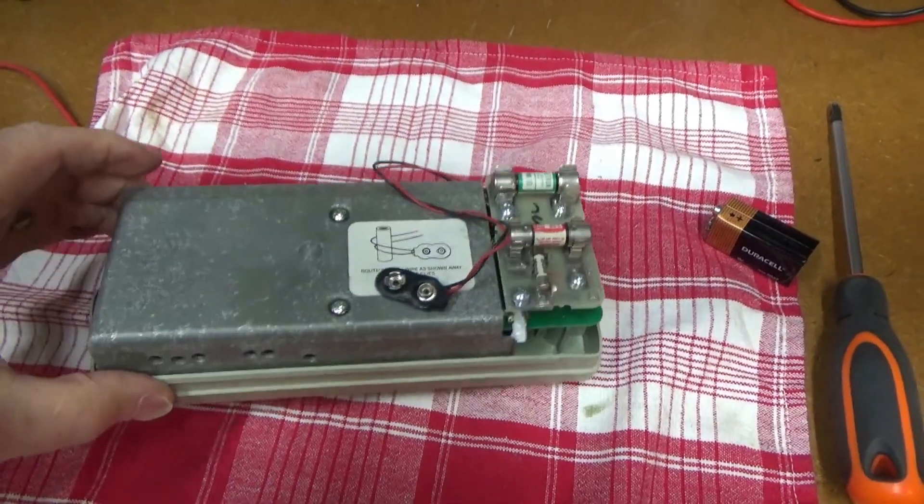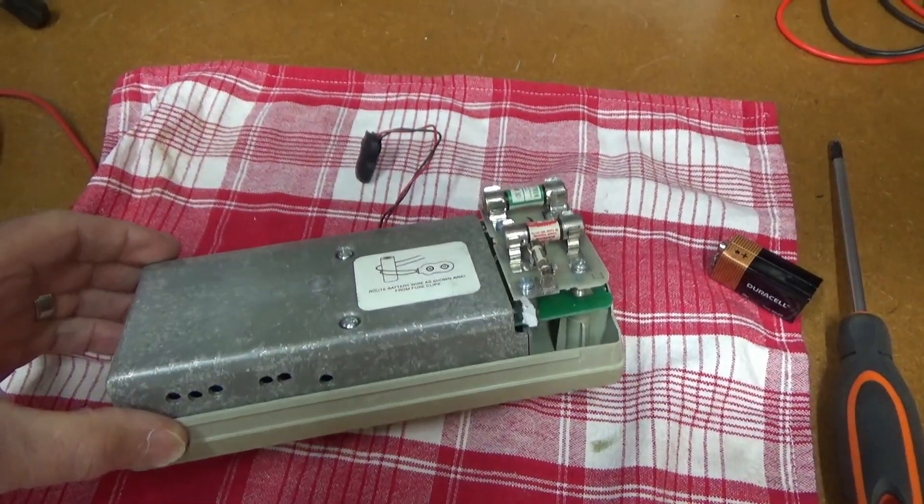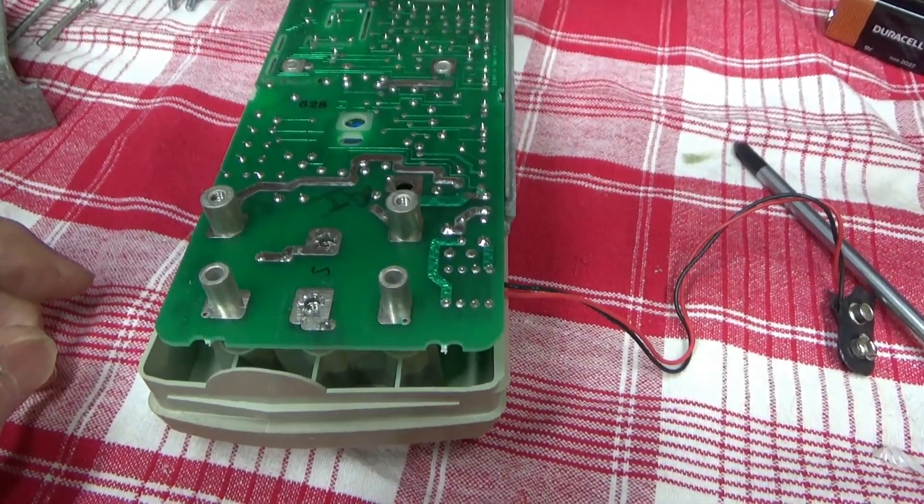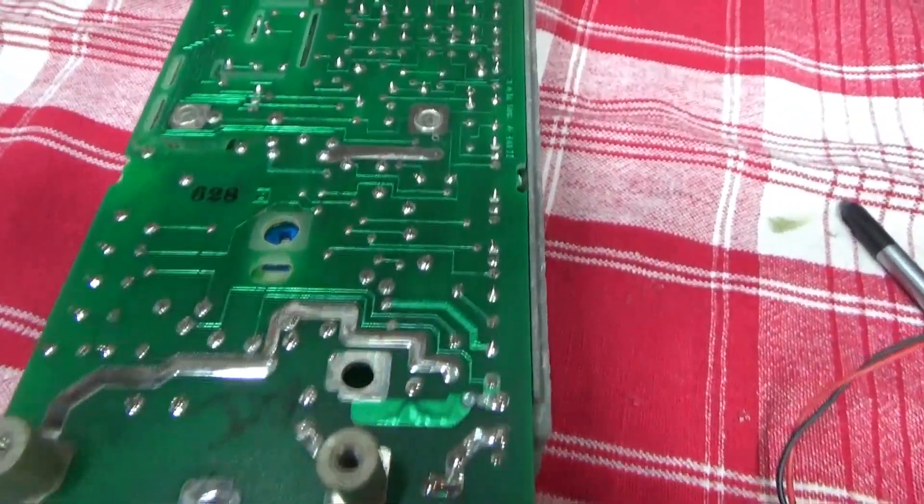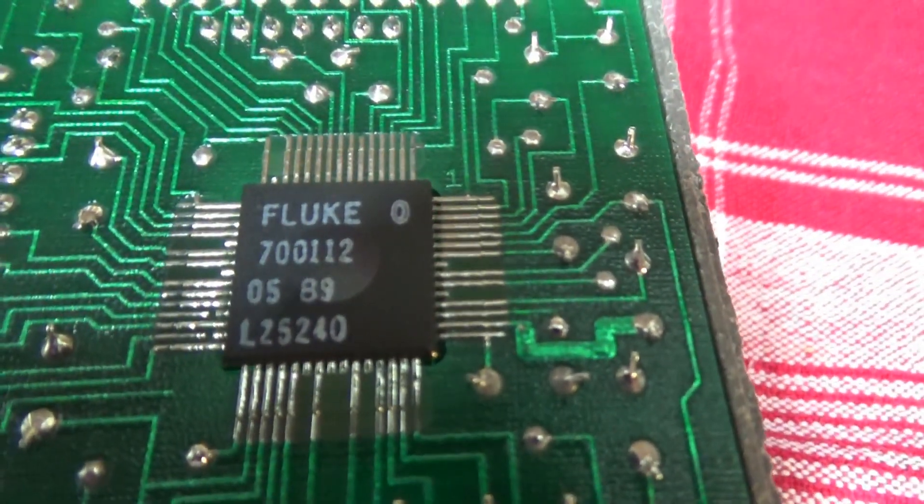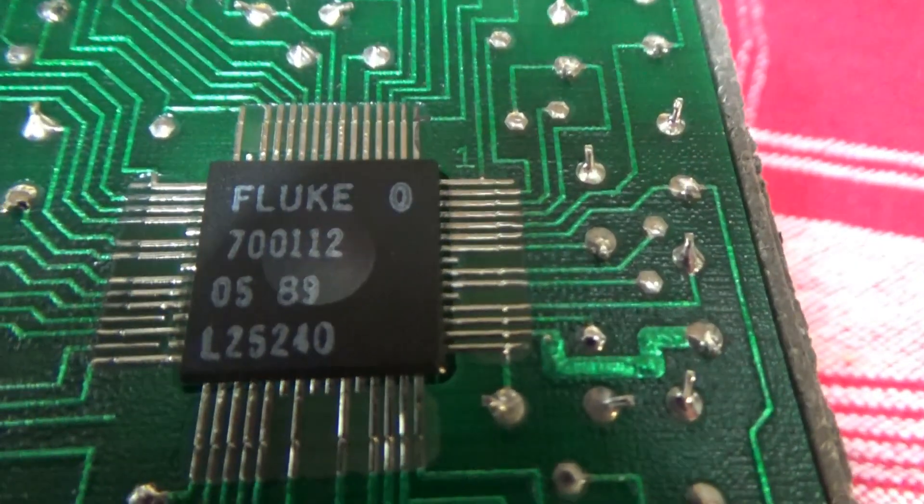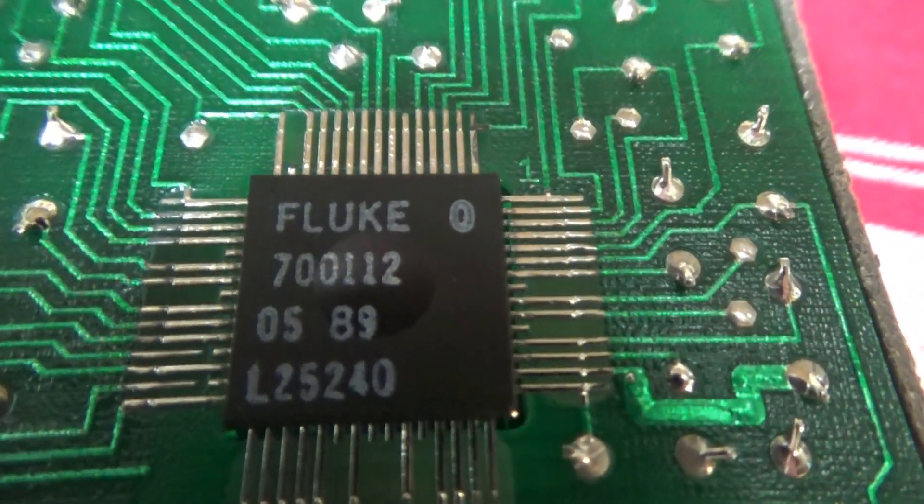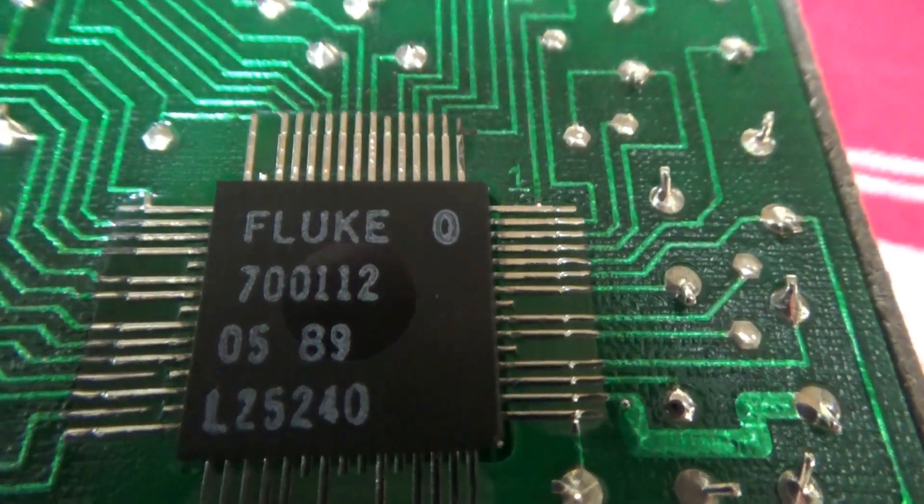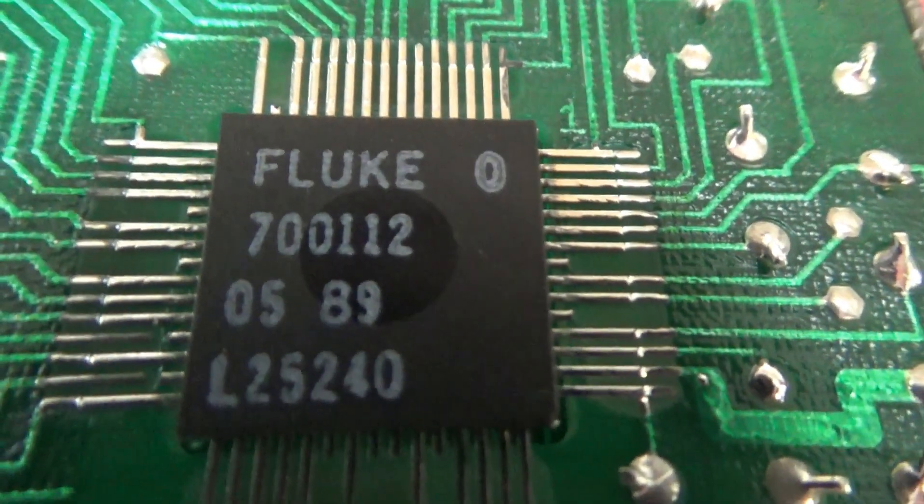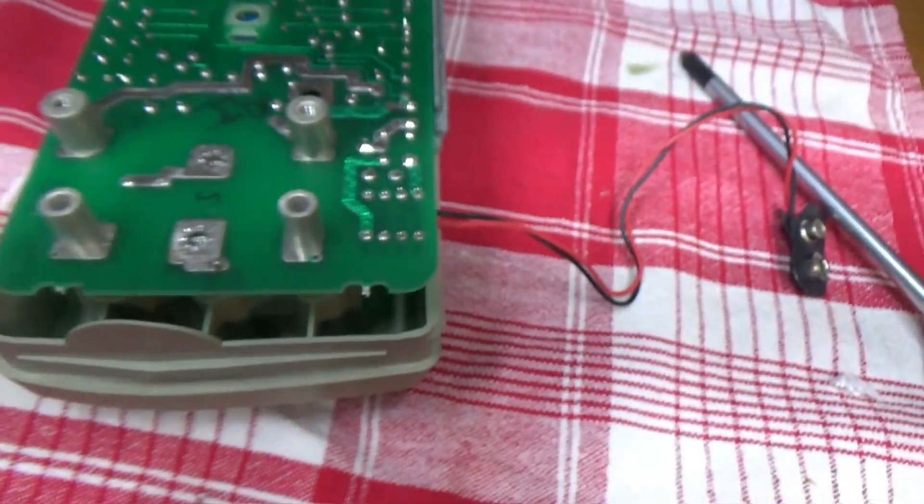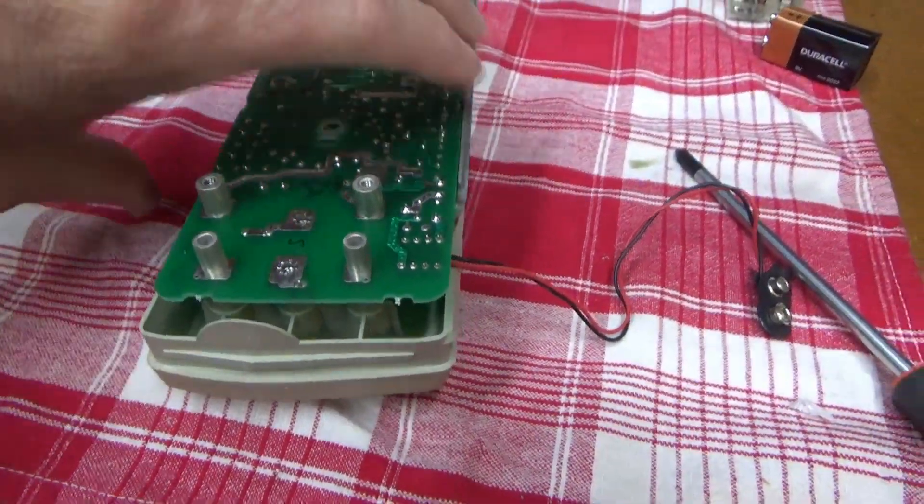Okay, this is really about as far as I need to take this thing apart, because right there's the Fluke chip. And this is the fifth week of 1989. That's what it says. Closer, yeah, 05 of 89. So that's when this one was made.